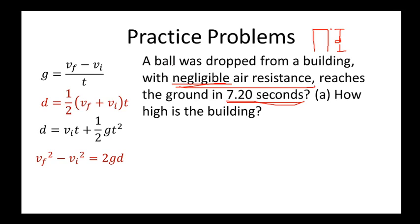Let's go through the given values. There are also givens not explicitly stated in the problem. First, since the object is falling, the acceleration due to gravity g equals 9.8 meters per second squared. Second, since the ball was dropped, its initial velocity is 0. Those are the usual givens that may not be shown in the problem. We are asked for the distance — how tall the building is.